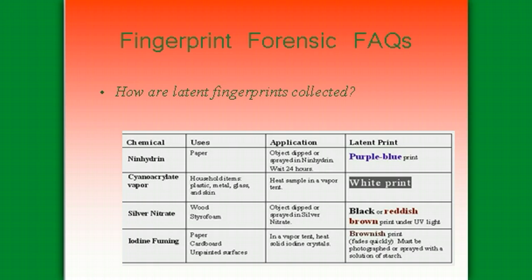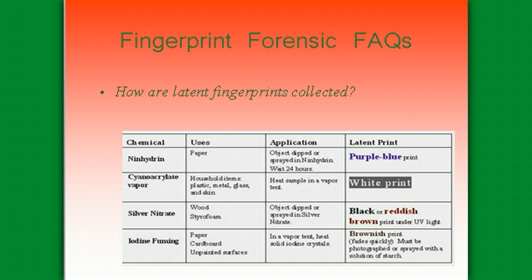There are some basic frequently asked questions about how latent fingerprints are collected. Focus in your notes on the different uses and applications. Ninhydrin is used on paper — the object can be dipped or sprayed, and you have to leave it for about 24 hours before that purple-bluish print shows up. Cyanoacrylate vapor can be used on plastic, metal, glass, and even on the surface of skin if needed. Silver nitrate is really good for wood and styrofoam. Iodine fuming is good for paper, cardboard, and other unpainted surfaces.